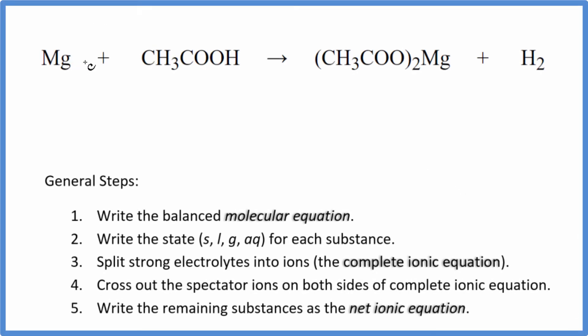In this video, we'll write the balanced net ionic equation for Mg plus CH3COOH. This is magnesium plus acetic acid. Sometimes you'll see the acetic acid written as HC2H3O2. It's the same thing, so we'll go with this one in this video.